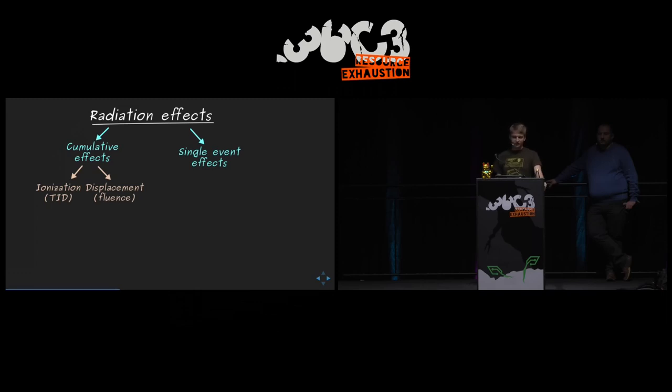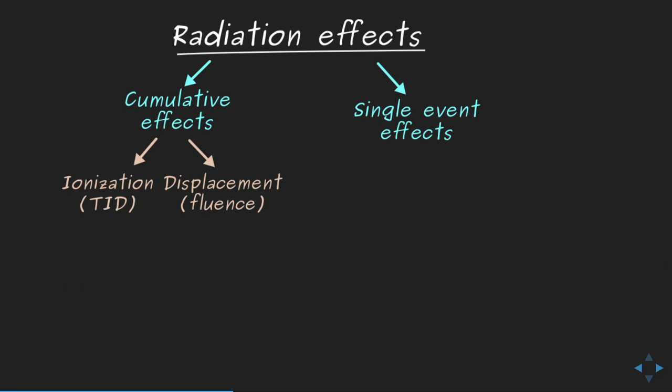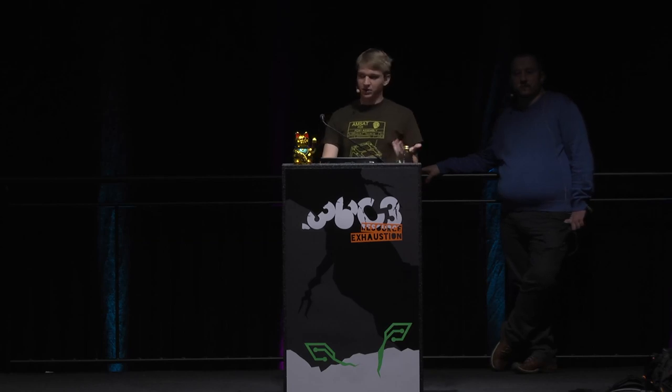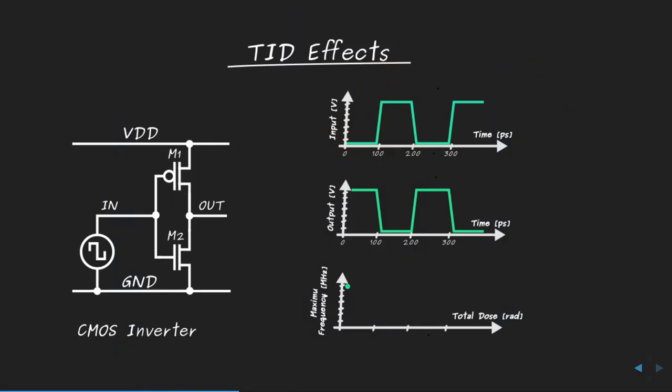For cumulative effects, there are two main subclasses: ionization (TID — total ionizing dose) effects, and displacement damage. Displacement damage occurs when an atom in the silicon lattice is displaced from its position, changing the semiconductor structure. Fortunately, displacement damage doesn't have a big impact on the CMOS digital circuits we're considering, so we focus on ionization damage. Ionization occurs whenever electrons are removed from or added to an atom, effectively transforming it into an ion.